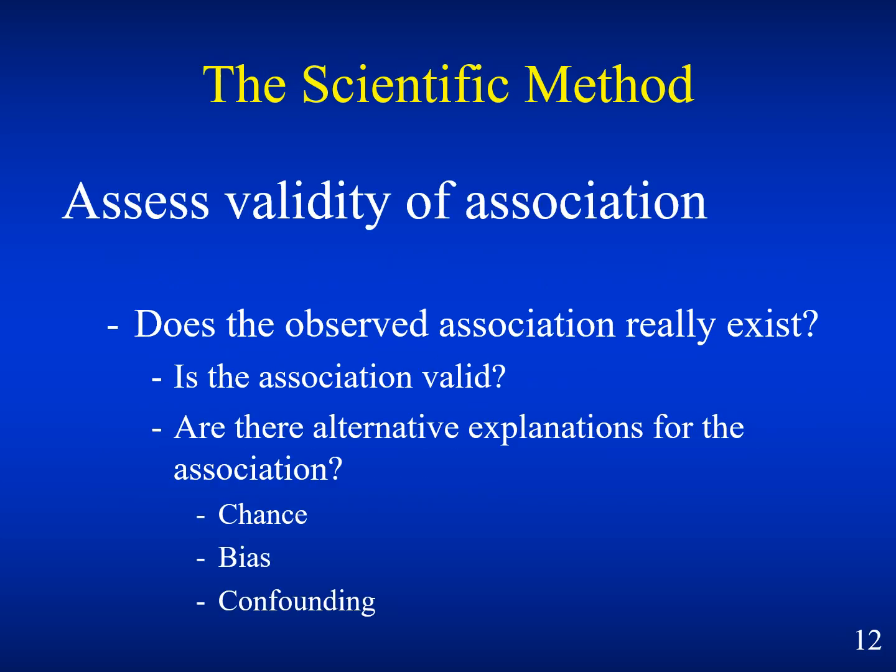The scientific method assesses the validity of association. Does the observed association really exist? Is it valid? Or are there alternative explanations for the association, such as chance, bias, and confounding, which we will also learn about in later lectures of this module?